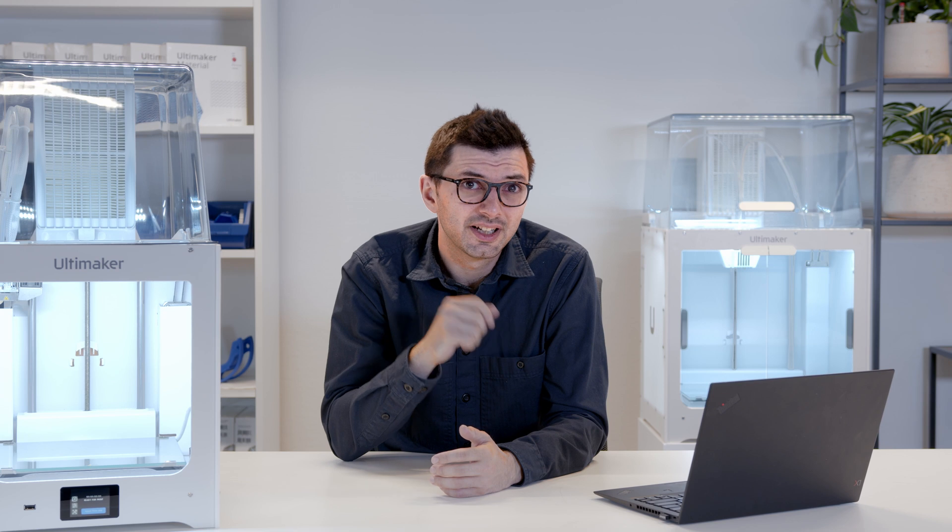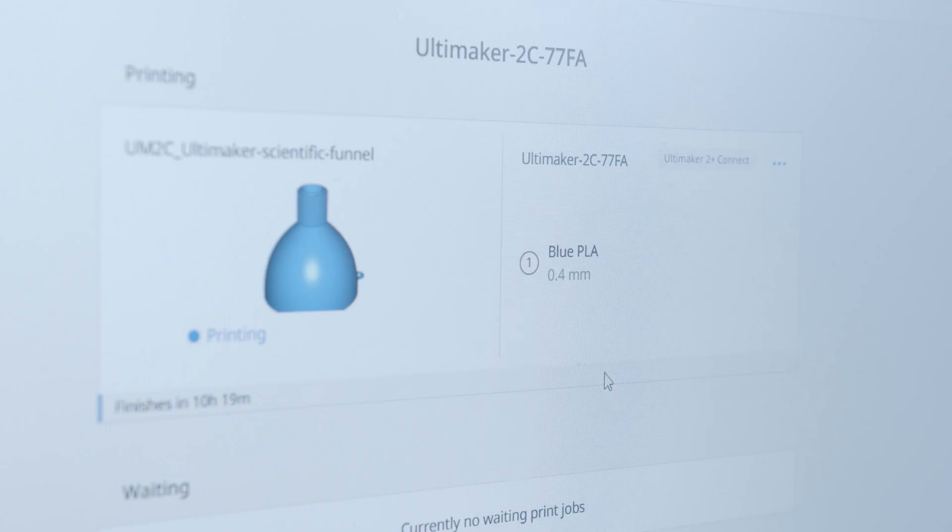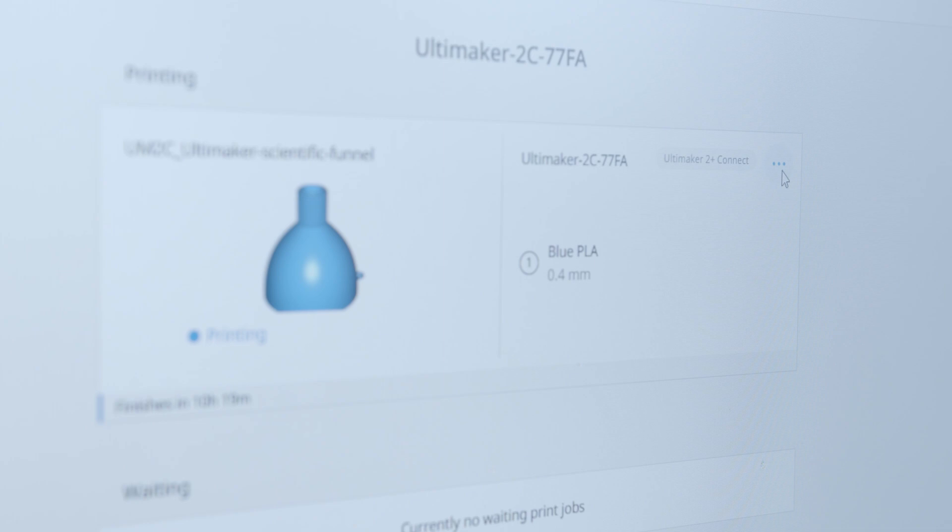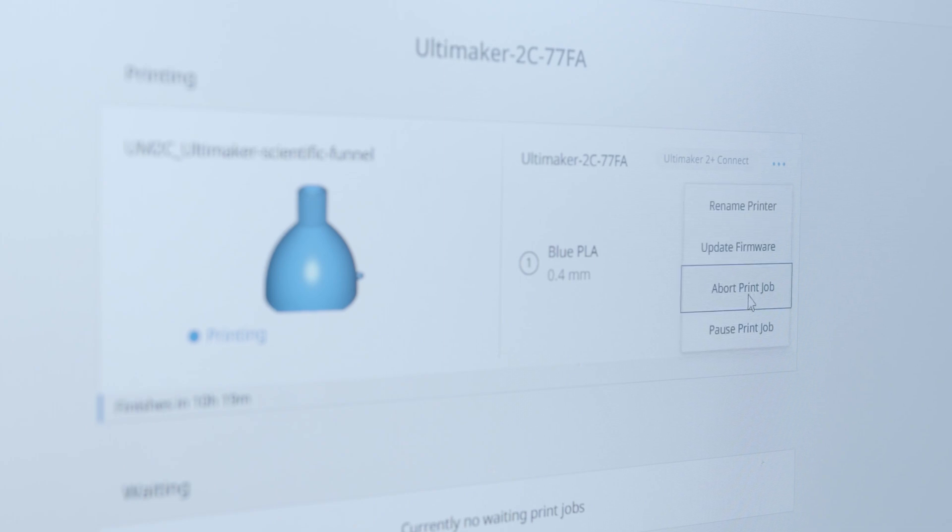With Firmware 1.4 it's also easier to control your printer remotely. You can pause and resume the print from the Digital Factory, and if you have to, you can also abort it.